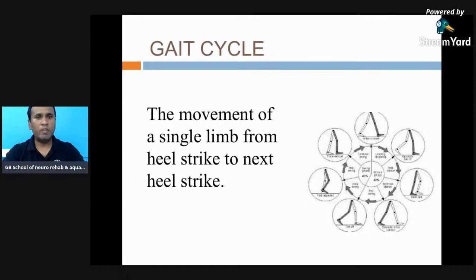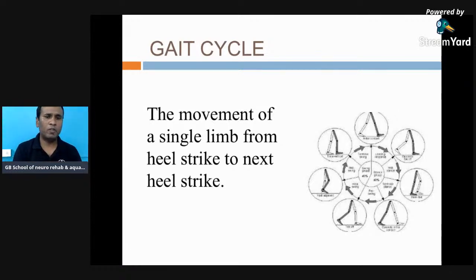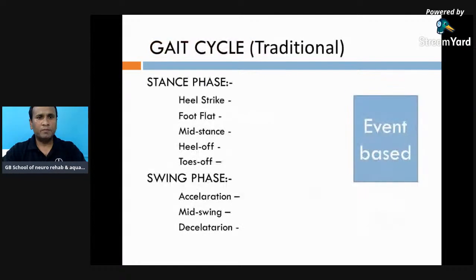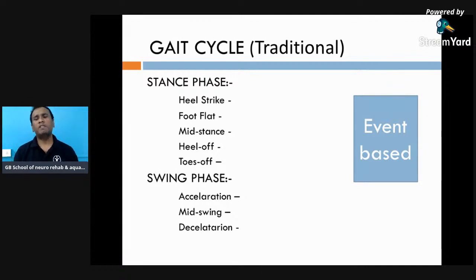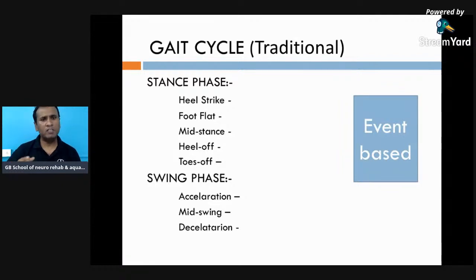The gait cycle is defined from a single limb's heel strike to the next heel strike of the same limb. One gait cycle is traditionally classified into two phases: stance phase and swing phase. Stance phase is divided into five sub-phases and swing phase into three sub-phases. This traditional classification is event-based — named after what event is occurring, such as heel strike, foot flat, mid stance, heel off, or toe off.